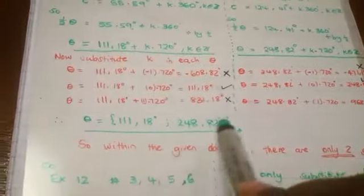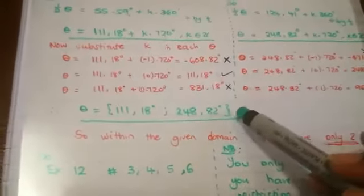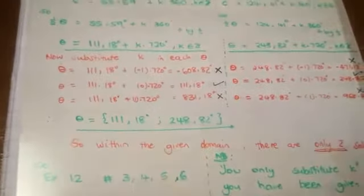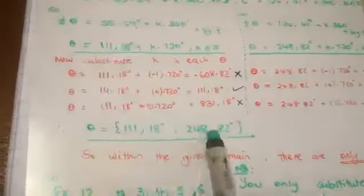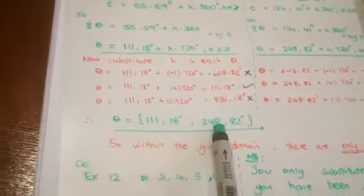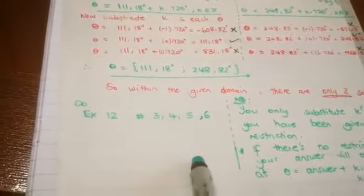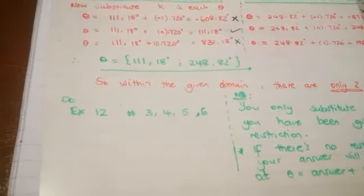And now you see that there's no plus K times 720, because now you were given a restriction, and in that given restriction there are only two answers, so you write only those two answers. Okay, I hope that is clear. So please do Exercise 12, number 3, 4, 5, and 6. Thank you.